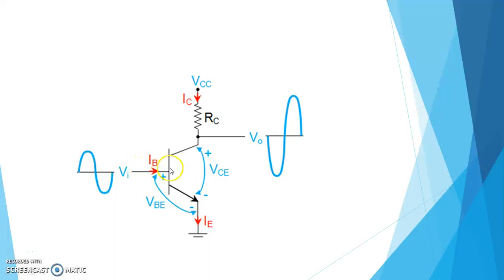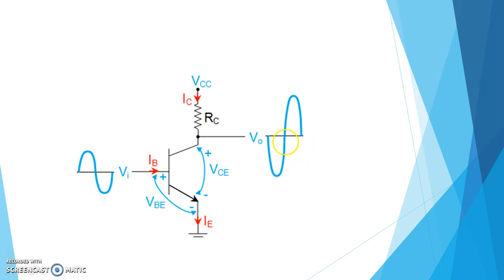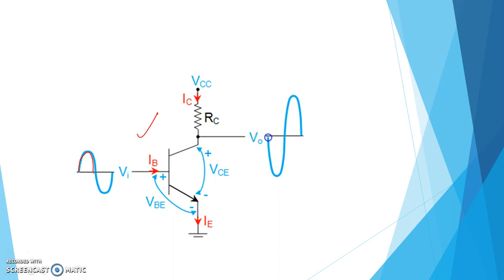Hello friends. In this video, I am going to show you why there is a 180 degree phase shift in the output of the common emitter amplifier. We are applying a sinusoidal input at the base and taking the output from the collector. The input is starting from the positive half cycle, but the output — which is amplified — is starting from the negative half cycle. So why there is a 180 degree phase shift, we will discuss in this video.